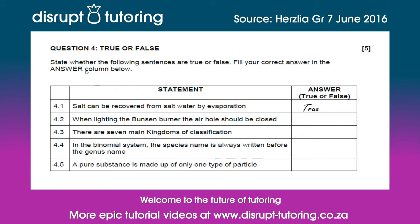4.2 reads: when lighting the Bunsen burner, the air hole should be closed. This statement is absolutely true, because it is important to close the air hole. Remember, the air hole regulates the amount of flame and the amount of heat going to be produced by the Bunsen burner, so it has to be closed.